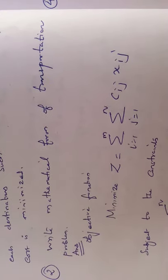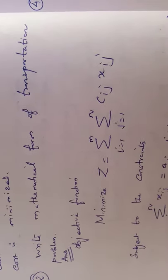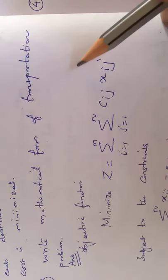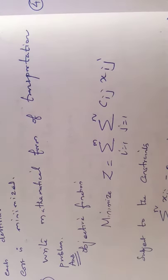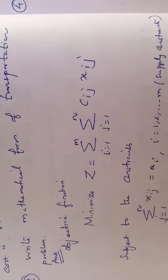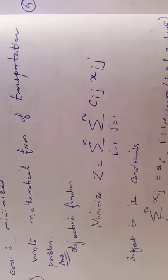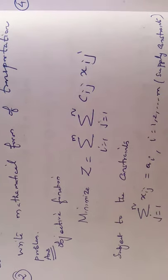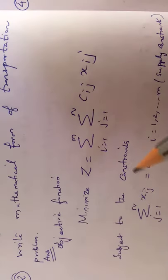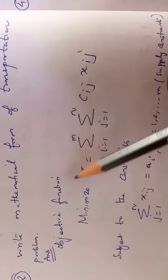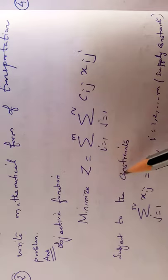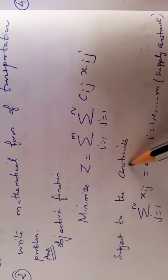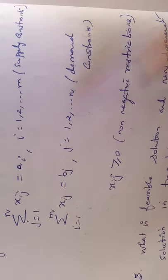Question No. 2: Write the mathematical form of the transportation problem. The mathematical formulation of a transportation problem consists of three parts: first, the objective function; second, subject to the constraints; and third, the non-negativity restrictions.